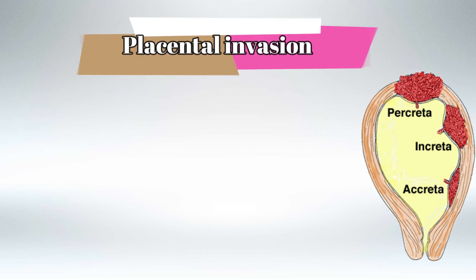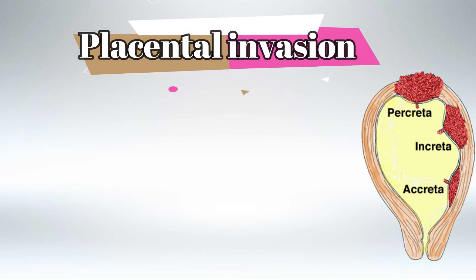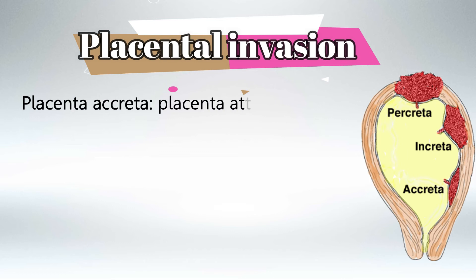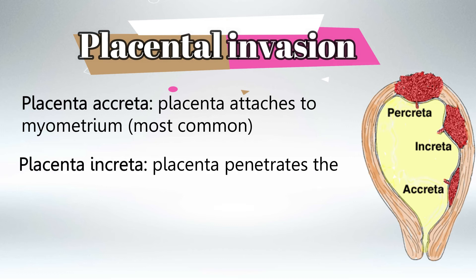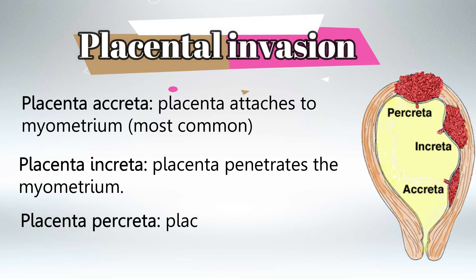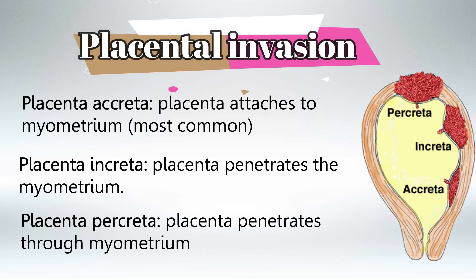Next we'll talk about placental invasion. Placenta accreta means that the placenta is attached to the myometrium, and this is the most common type. Placenta increta means the placenta is integrated into the myometrium, and placenta percreta means the placenta will penetrate the entire myometrium and go outside the uterus — it can even invade adjacent tissues like the rectum and the bladder.